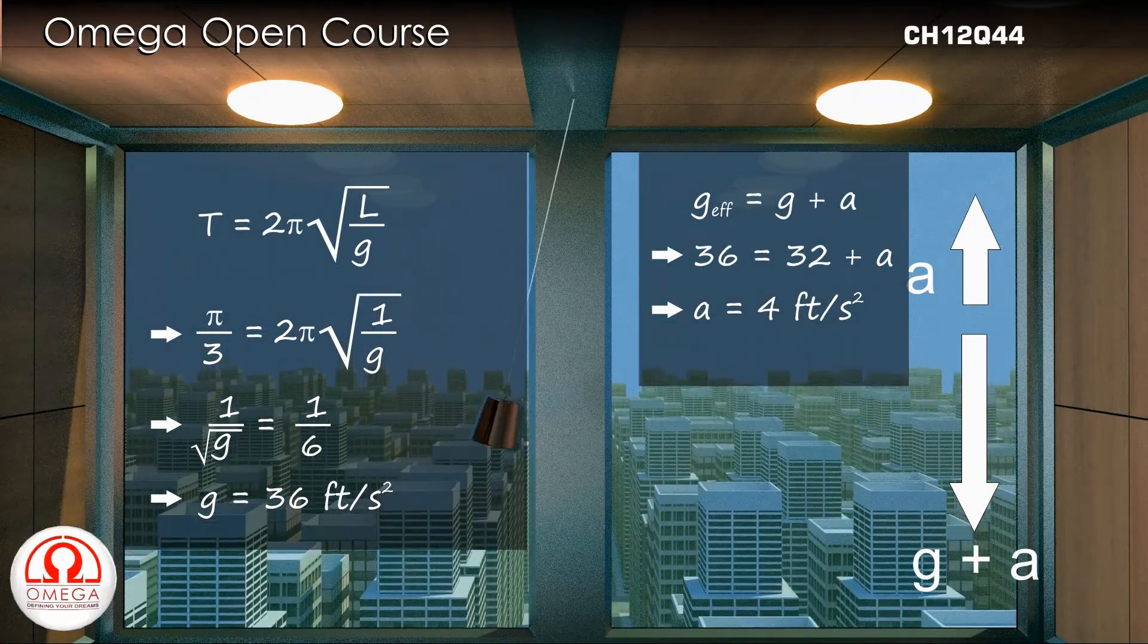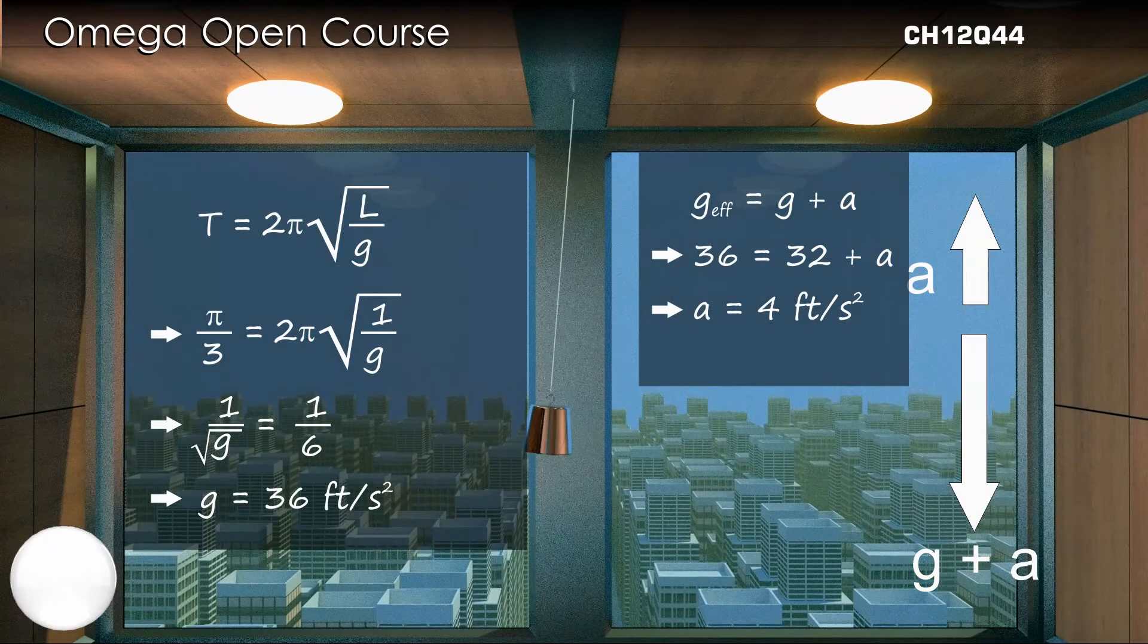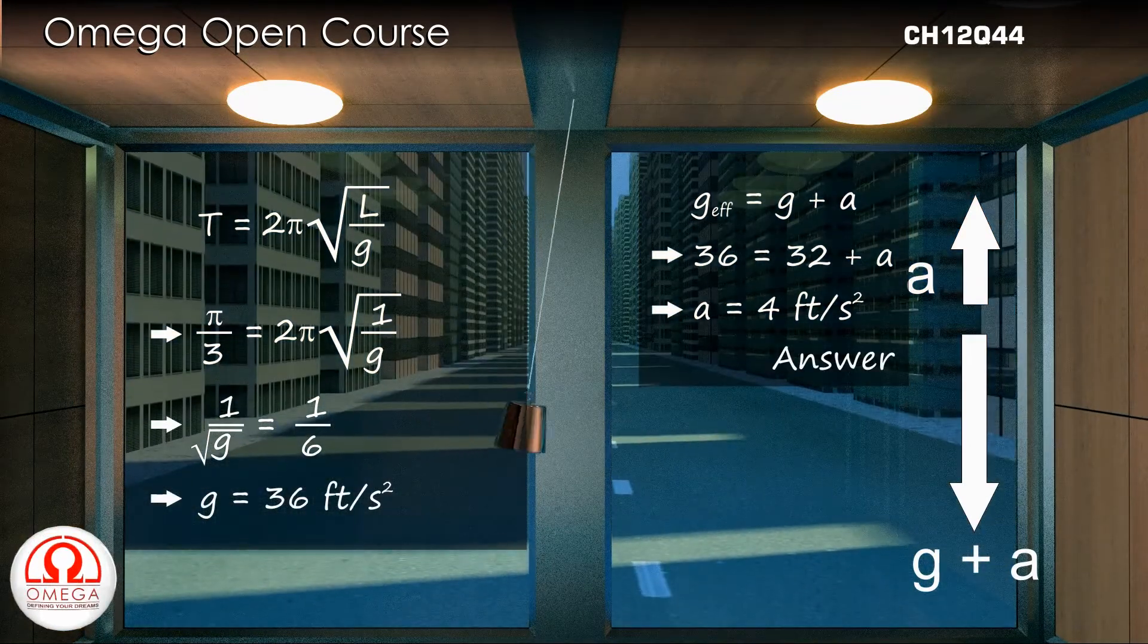Thus, the acceleration of the elevator is 4 feet per second squared in the upward direction. This is our answer.